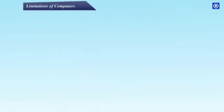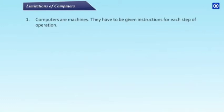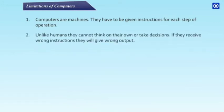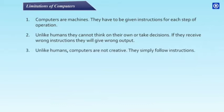Limitations of Computers: Computers are machines and must be given instructions for each step of operation. Unlike humans, they cannot think on their own or take decisions. If they receive wrong instructions, they will give wrong output. Unlike humans, computers are not creative — they simply follow instructions.